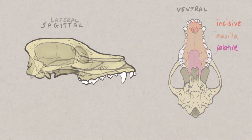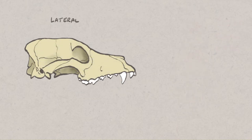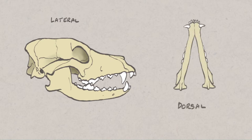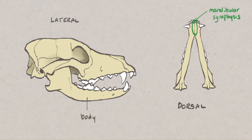Finally, let's look at the lower jaw, or mandible, using a lateral view of the skull and a dorsal view of the mandible itself. The mandible is formed by two halves joined together rostrally at the mandibular symphysis. Each half of the mandible is divided into the horizontal body and vertical ramus.